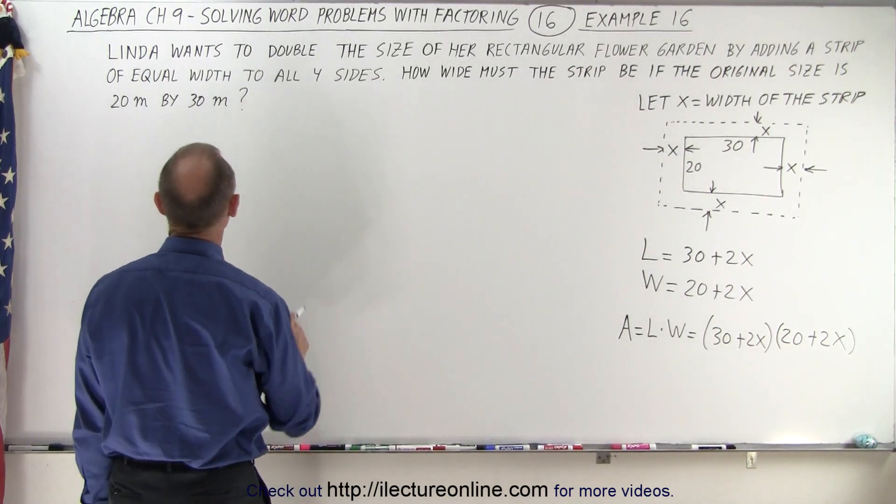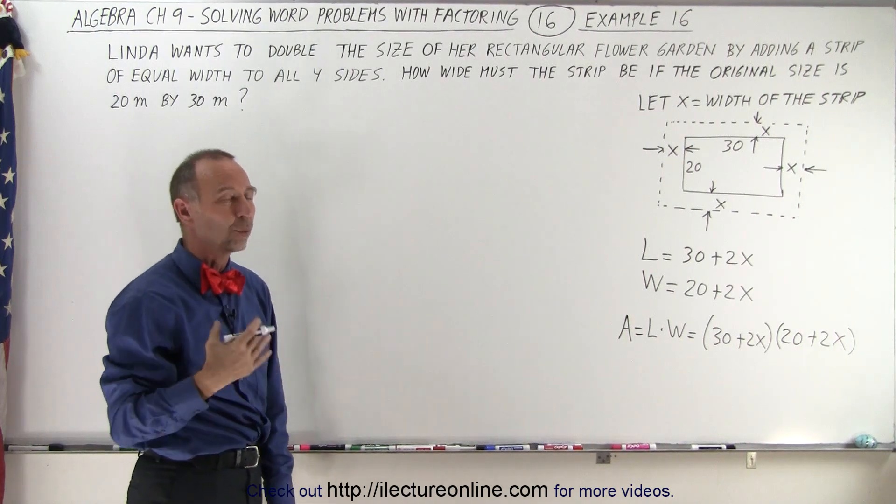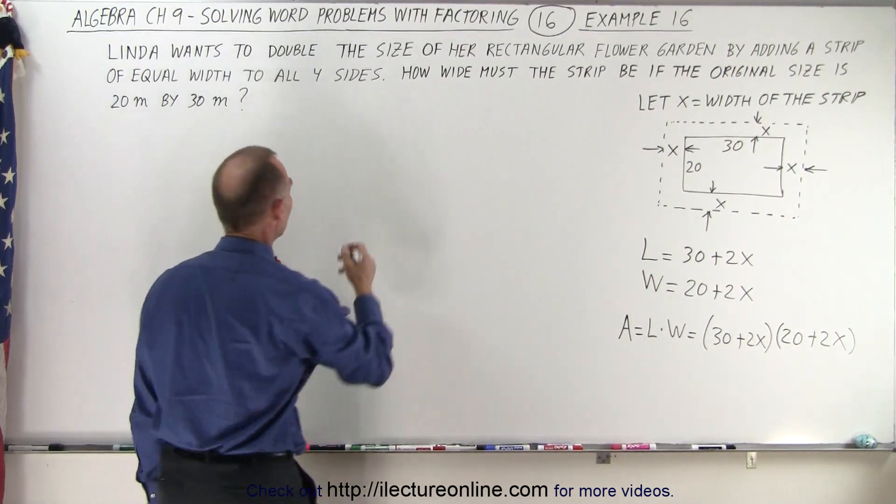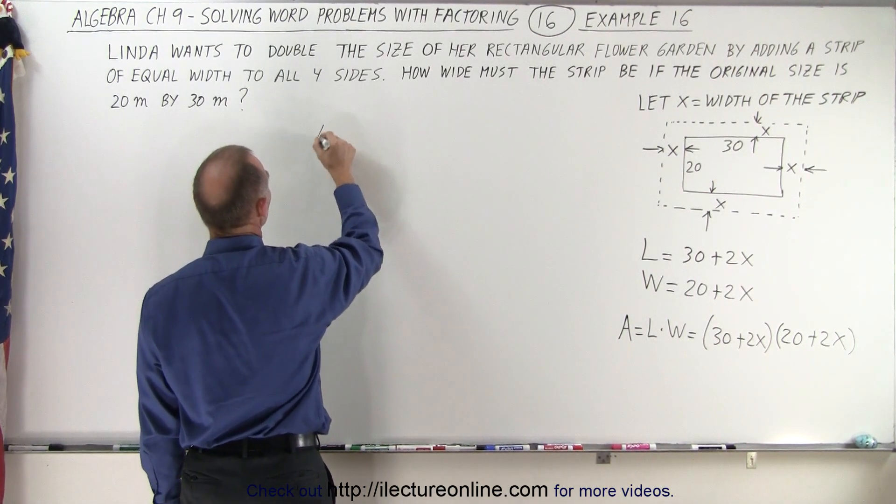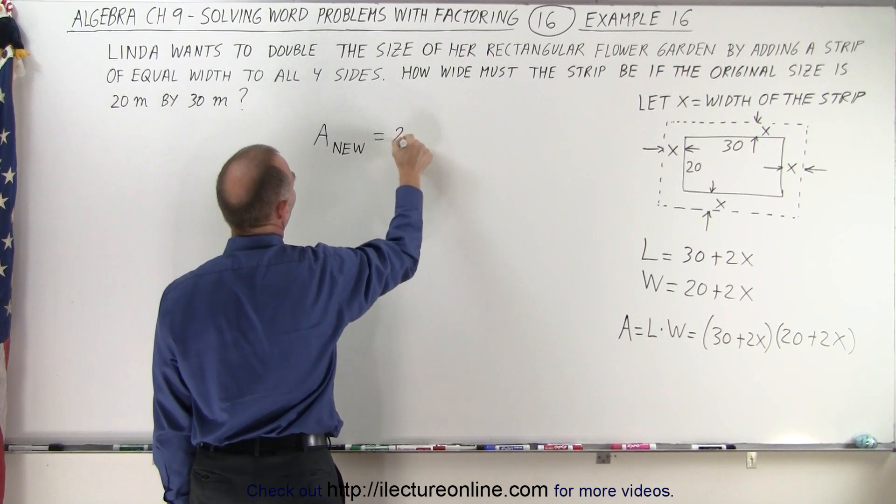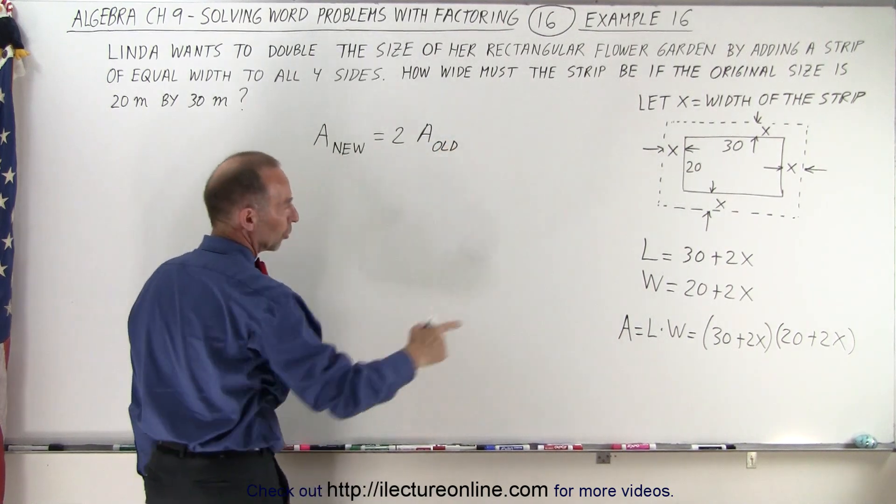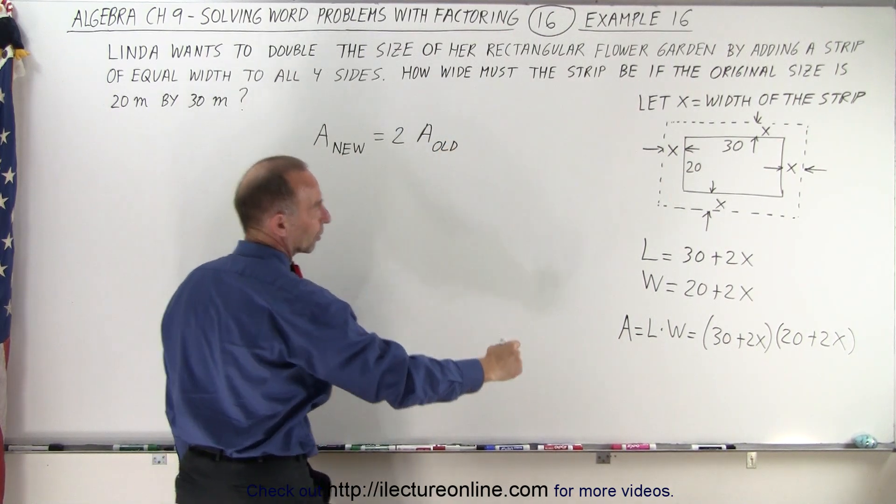And we know that that would be twice because we're looking to double the size, that has to be twice the original. That means that the area of the new rectangle is equal to twice the area of the old rectangle. So the new rectangle is right there, that's the area of the new one.